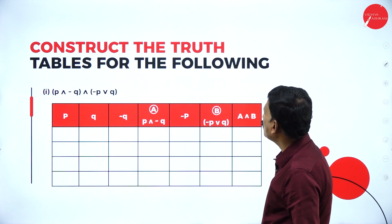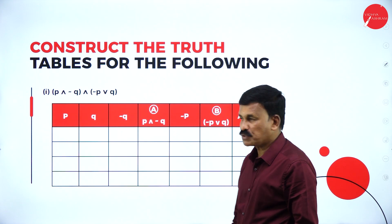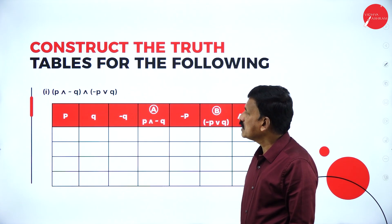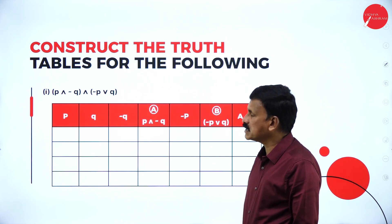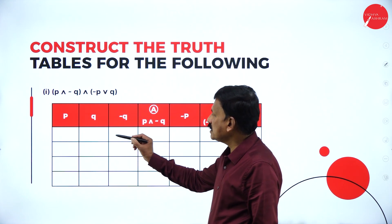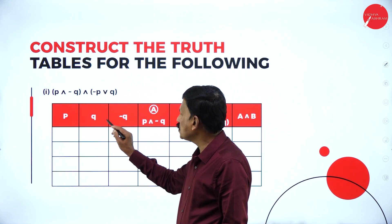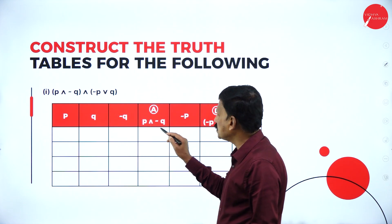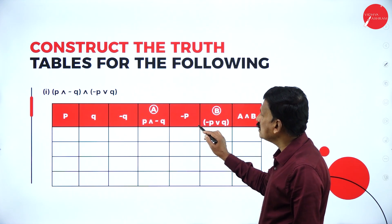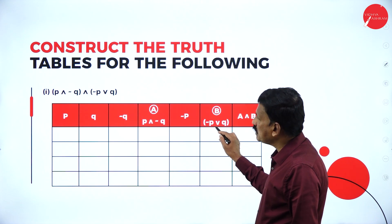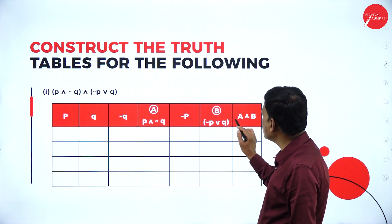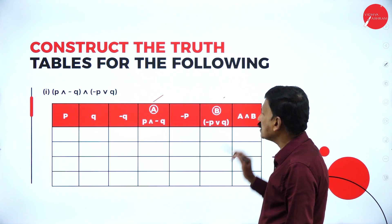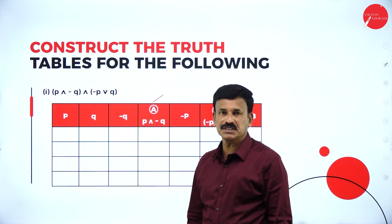Construct the truth table for the following proposition: P conjunction negation Q, conjunction negation P disjunction Q. As usual, write P, Q, negation Q, then the first part P conjunction negation Q, then negation P, then negation P disjunction Q. This is A and B, and these two are connected by conjunction — A conjunction B.